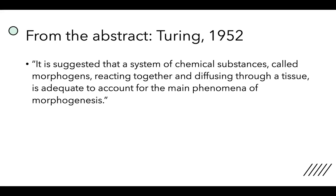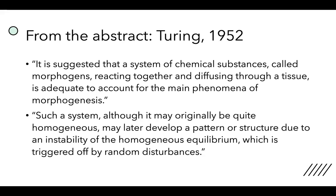The first sentence of the paper states: 'It is suggested that a system of chemical substances called morphogens, reacting together and diffusing through tissue, is adequate to account for the main phenomena of morphogenesis. Such a system, although it may originally be quite homogeneous, may later develop a pattern or structure due to an instability of the homogeneous equilibrium which is triggered off by random disturbances.' Now that we've learned the mathematical phenomena, this should make more sense.